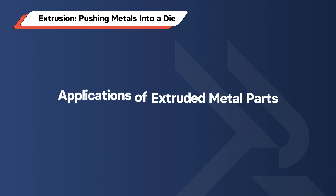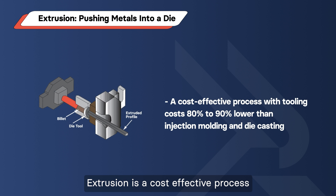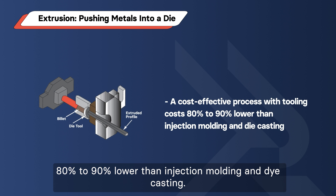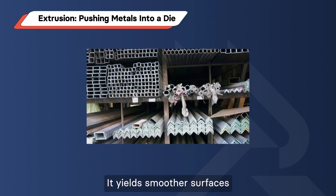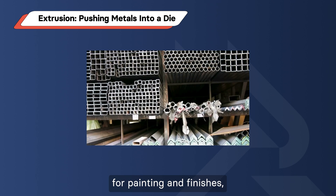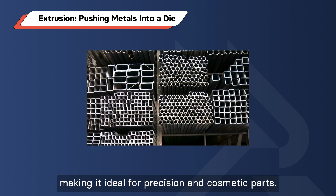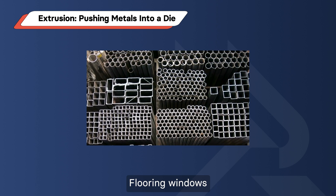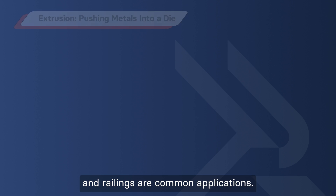Applications of Extruded Metal Parts. Extrusion is a cost-effective process with tooling costs 80% to 90% lower than injection molding and die casting. It yields smoother surfaces for painting and finishes, making it ideal for precision and cosmetic parts. Flooring, windows, and railings are common applications.